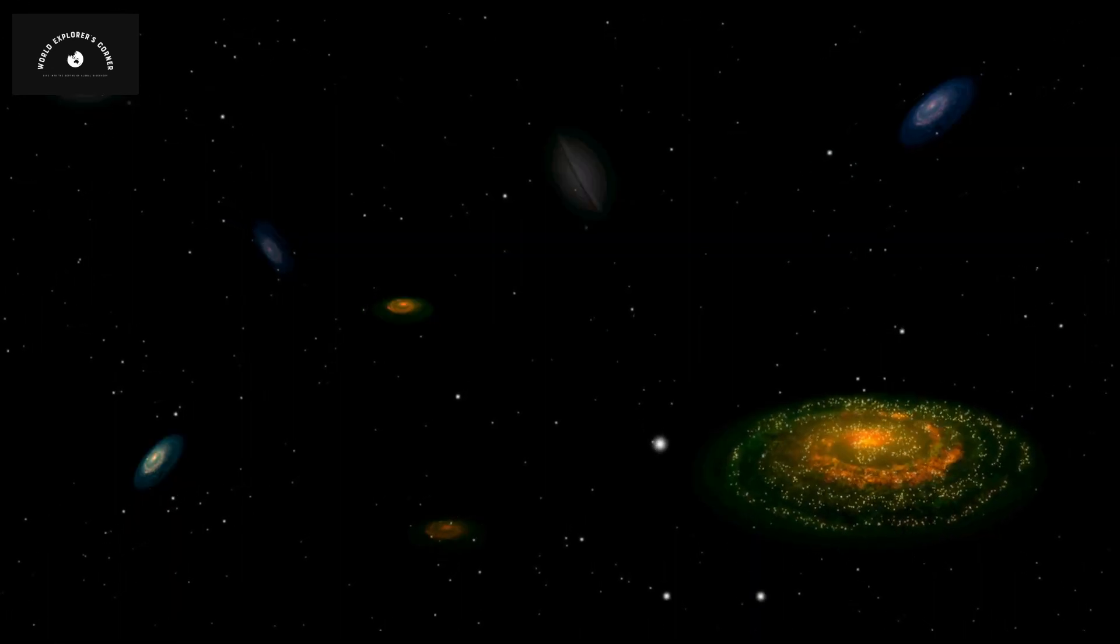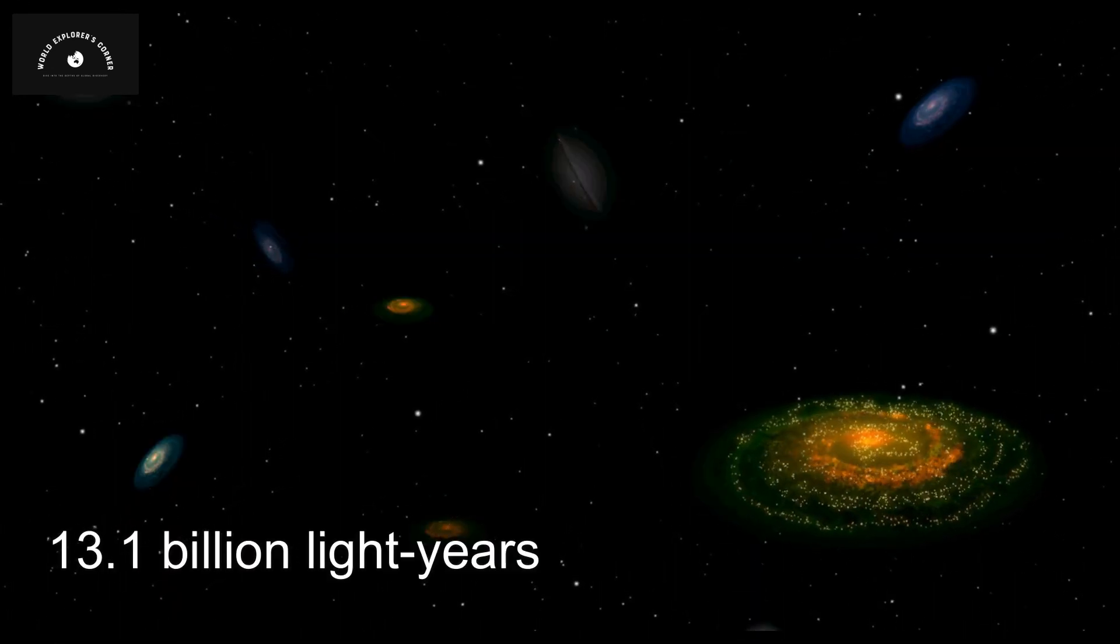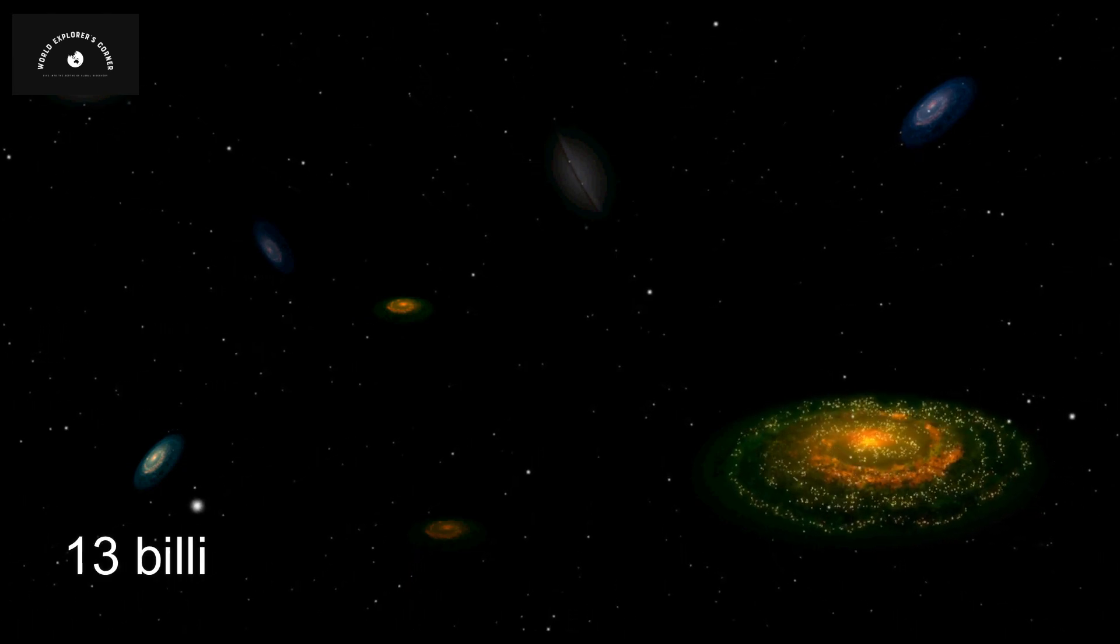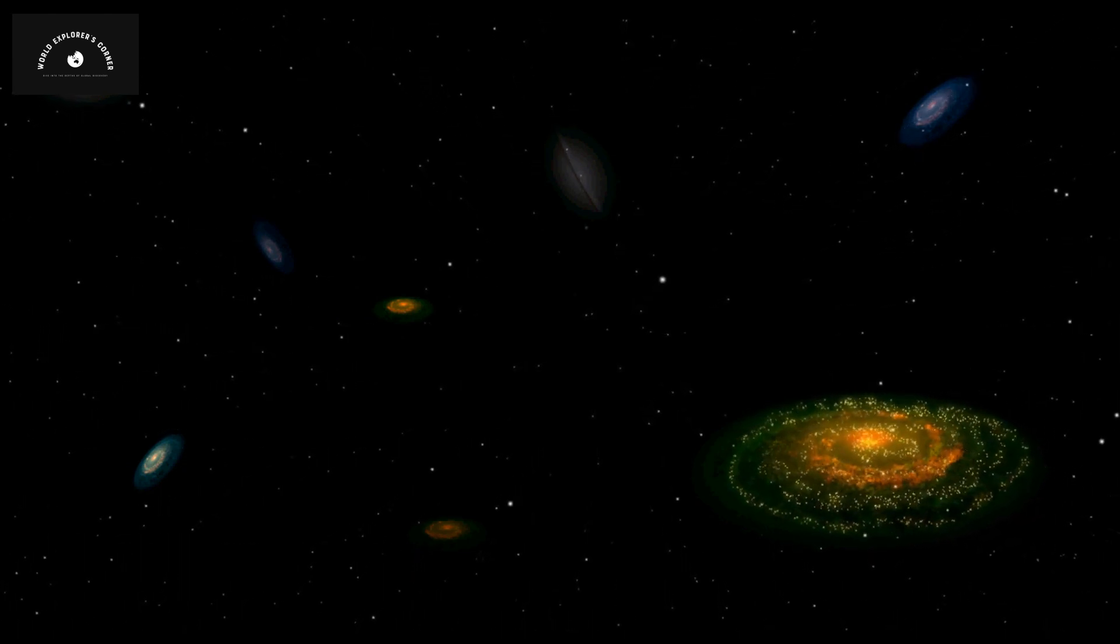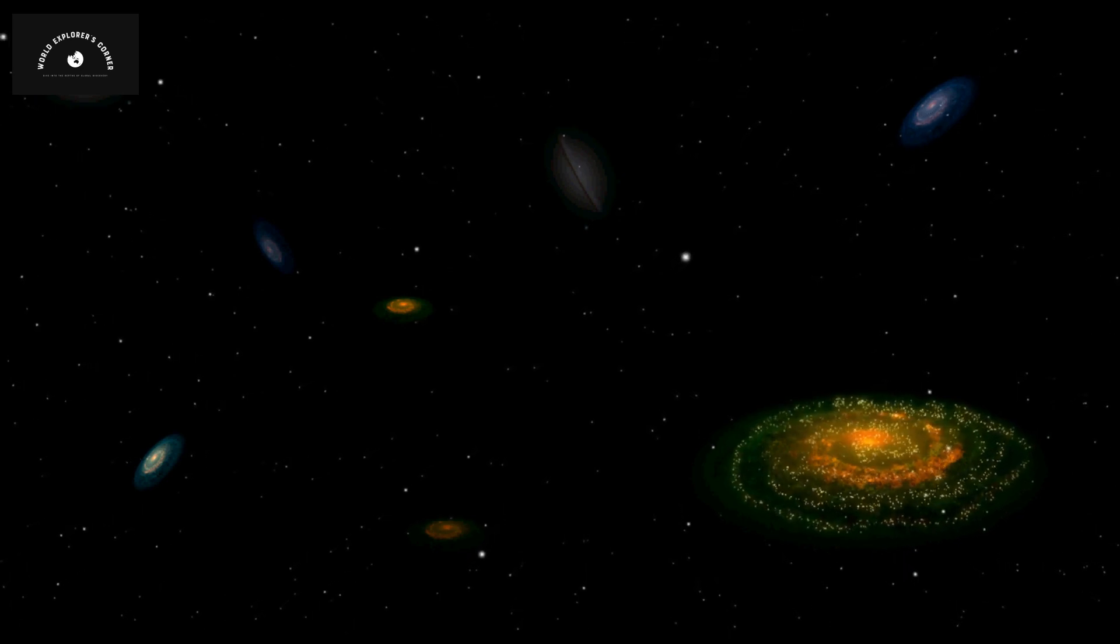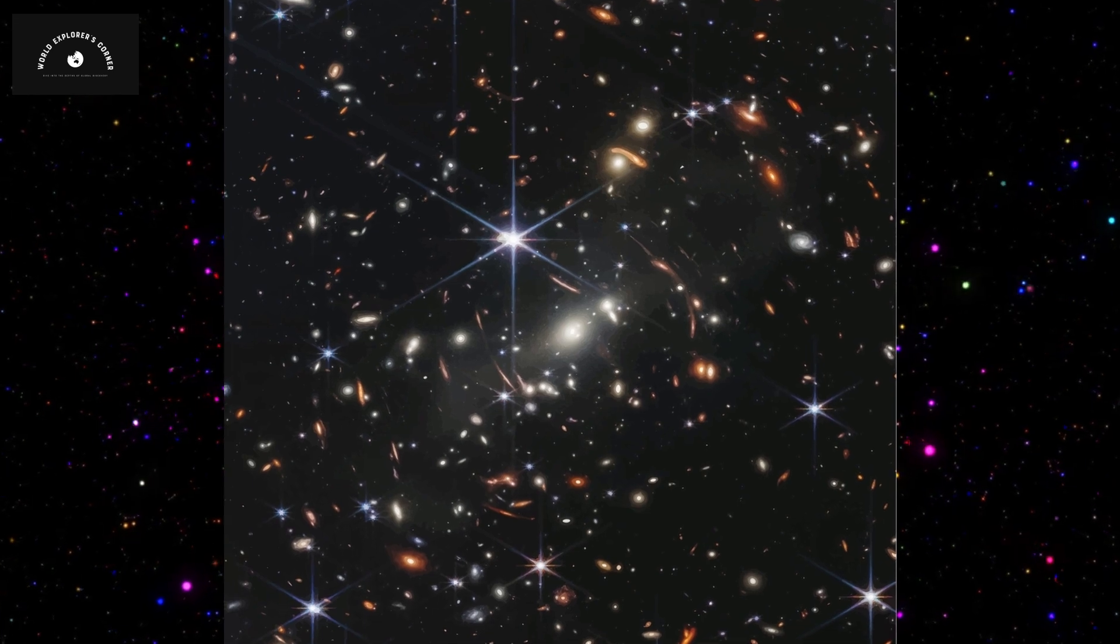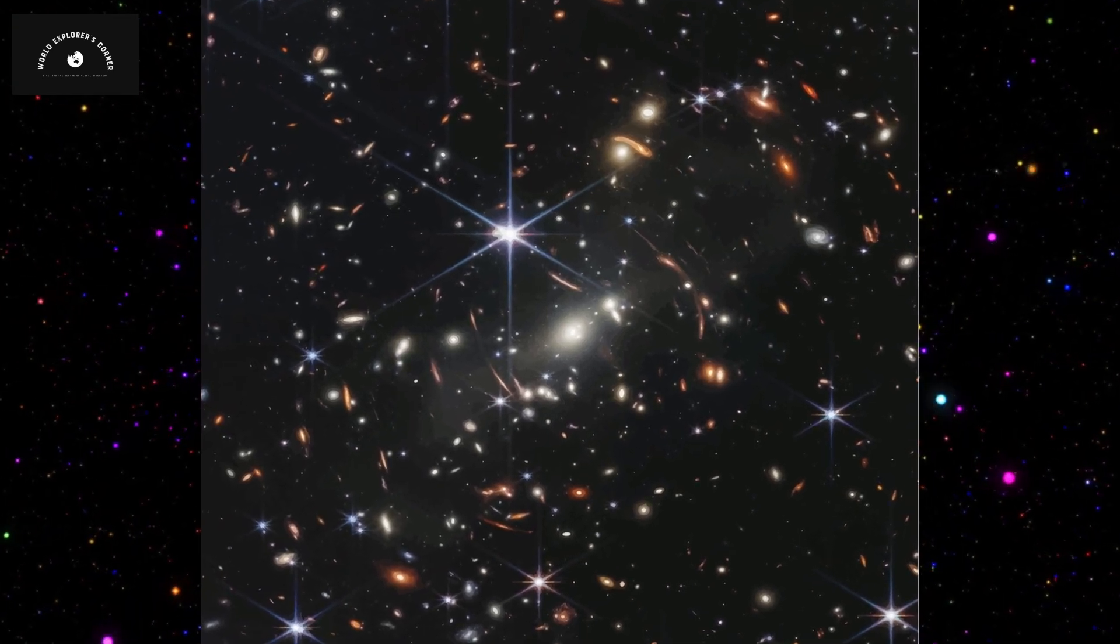Some of these galaxies are located 13.1 billion light years away from Earth. It took approximately 13 billion years for the light from these galaxies to reach us. Therefore, it is accurate to say that the view we are witnessing today is, in fact, 13 billion years old.